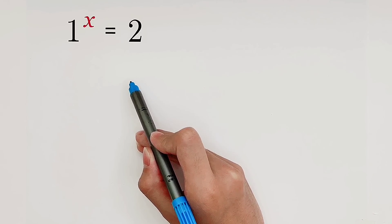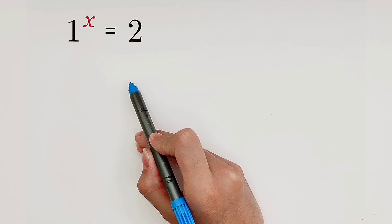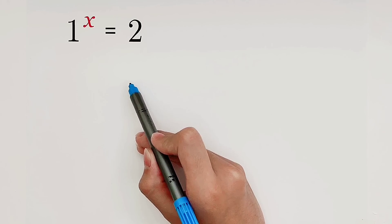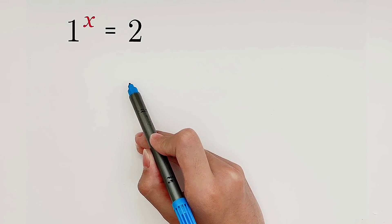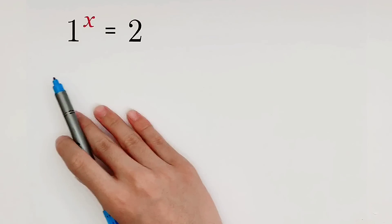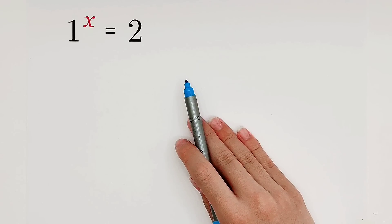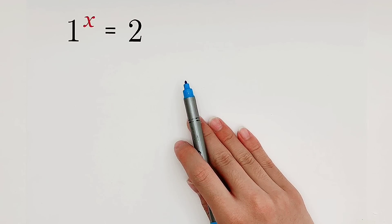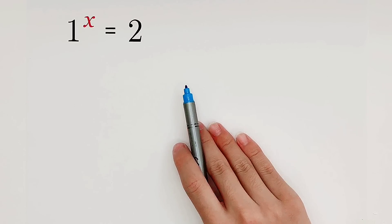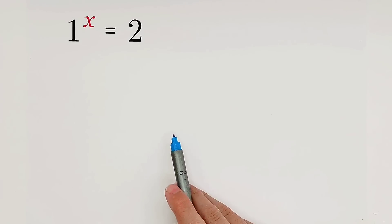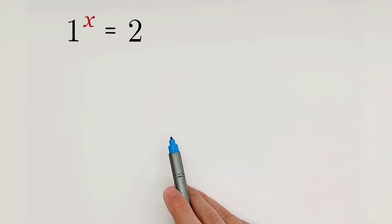It looks so simple and easy. Is it easy to solve? We don't know. Maybe I want to say this equation is false — it is wrong. Because 1 to the power of any number is equal to 1. It cannot be equal to 2, so it's wrong.